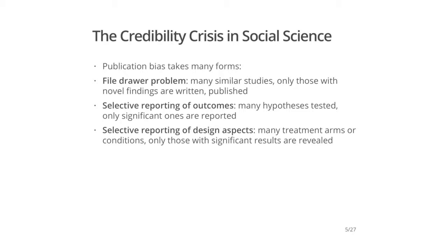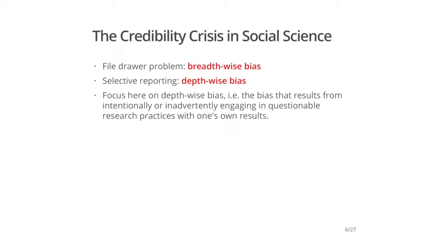Some of these other forms include selective reporting of outcomes, where you test many hypotheses but only the statistically significant ones get reported. Alternatively, selective reporting of design elements, where you have many treatments and conditions but only those giving significant results are revealed while others are concealed. We define the first problem as breadth-wise bias, and selective reporting as depth-wise bias — when researchers engage in questionable research practices with their own data and results. It's this one that we focus on today.